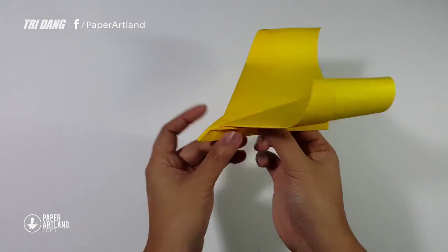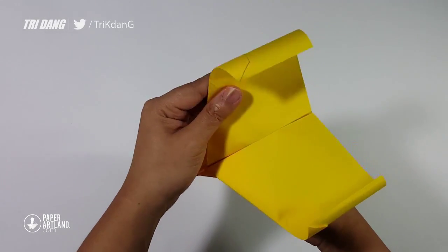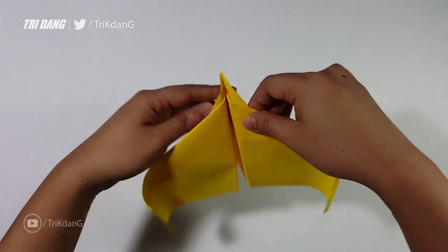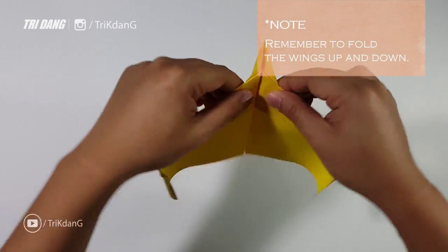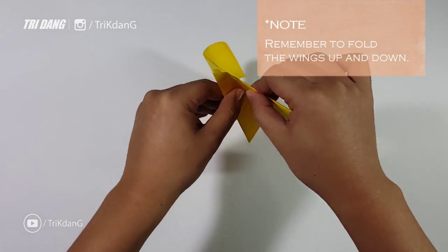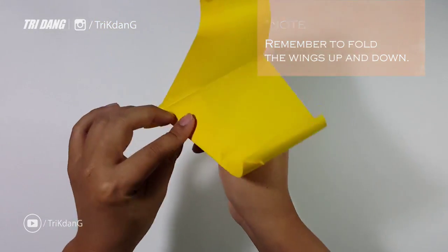However, if you throw the plane right now, it will not flap and it just glides for distance. So to make the eagle fly, the eagle needs to practice and it needs to exercise so it can flap its wings.